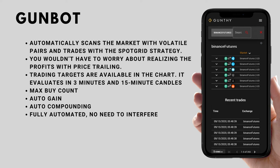GunBot can utilize this strategy and make it completely automated, with the following features: it automatically scans the market for volatile pairs and trades with the spot trade strategy. You wouldn't have to worry about realizing profits with price trailing. Targets are available in the chart. It evaluates on 3-minute and 15-minute candles. Max buy count can be adjusted, auto gain, auto compounding of capital — and it's completely fully automated with no need to interfere.